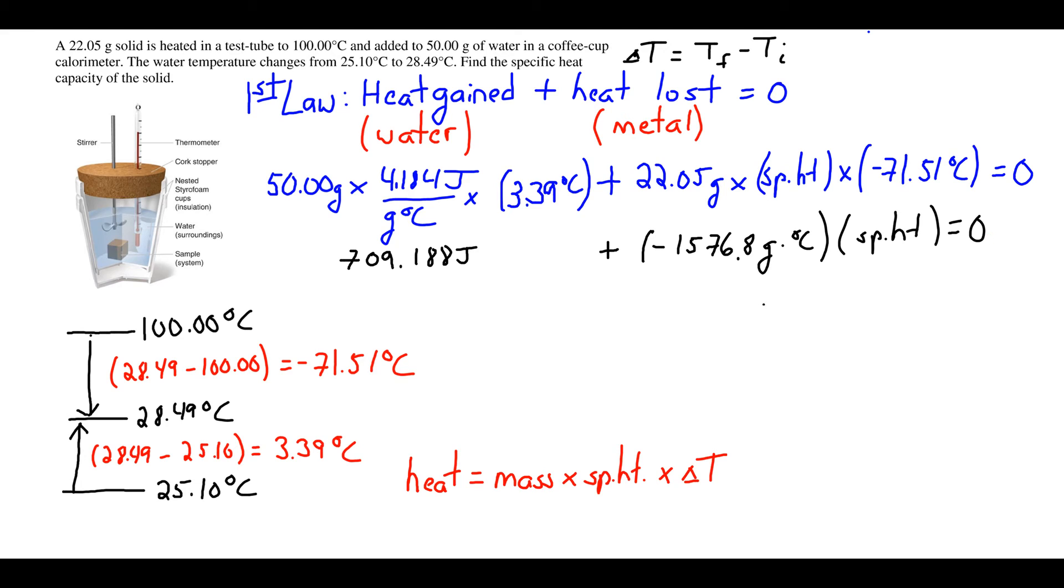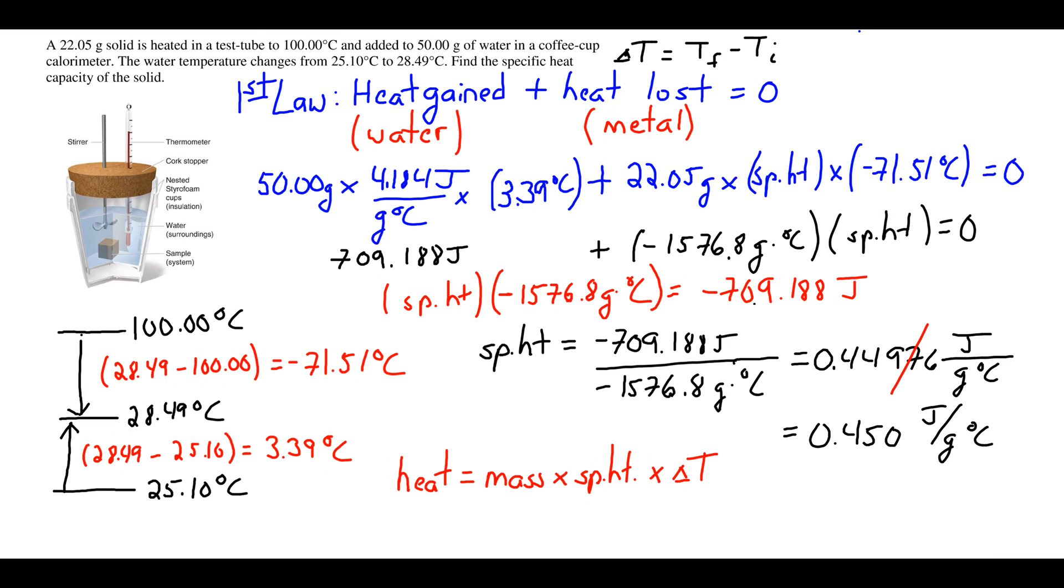We're going to collect like terms. We subtract the 709.18 from each side, so we have specific heat times this negative number equals negative 709.18. We're solving for specific heat. It looks like a lot of work here, but it really isn't—we're just solving for specific heat.